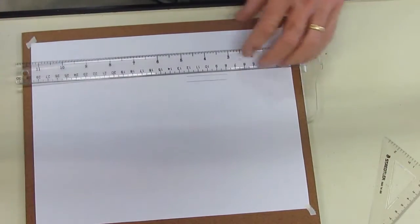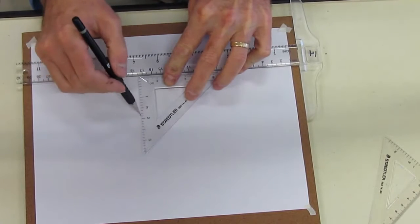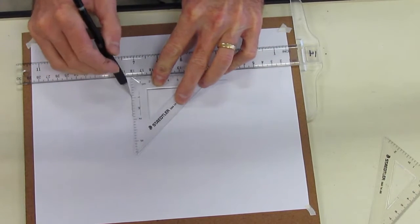Or, I could take a triangle, put it on my t-square, make a vertical line, make another line, now I'm parallel.